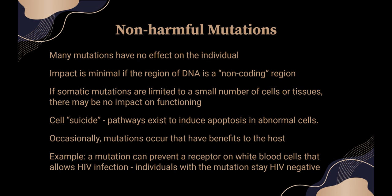Why don't mutations harm us? Many mutations have no effect on the individual. Impact is minimal if the region of DNA is a non-coding region, and that's 95% of your genome — it doesn't code for specific proteins, so it will absorb most of the brunt without impact on body function. If somatic mutations are limited to small numbers of cells or tissues, there might be no impact on functioning. There are also mechanisms that induce apoptosis — cell death in abnormal cells. And occasionally mutations occur that have benefits to the host; for example, there is a mutation that can prevent white blood cells from becoming infected with HIV, so those individuals will stay HIV negative even with exposure to that virus.